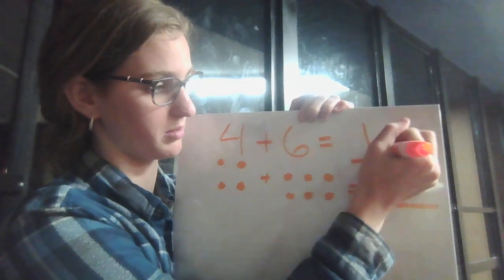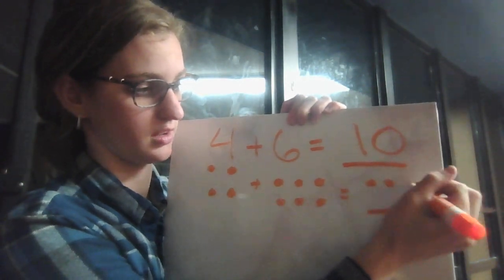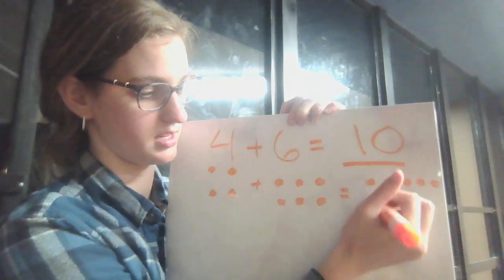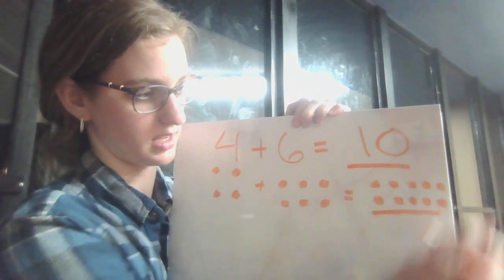So, your big number up here is ten. That's your whole number. And then your dotted answer, you want to add ten dots. Six, seven, eight, nine, ten. That's our first problem.